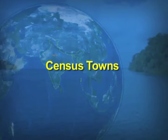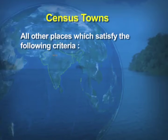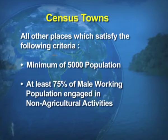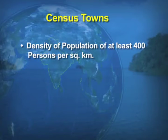Now what are the census towns? All other places which satisfy the following criteria. Number one, a minimum population of 5,000 in that area. Number two, at least 75% of the male working population should be engaged in non-agricultural activities. And the last criteria is the density of population should be at least 400 people per square kilometer. Then only the town will be known as a census town.